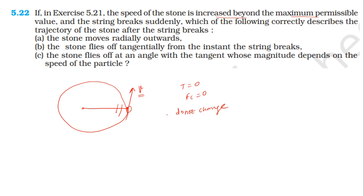When the string breaks, no force acts on the stone, so its direction does not change instantaneously. The stone flies off tangentially according to Newton's first law of motion — when no force is applied, velocity direction does not change. So the stone leaves the circular path tangentially.